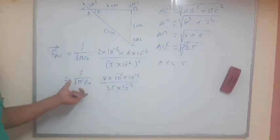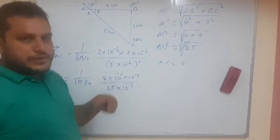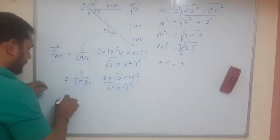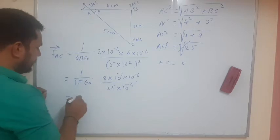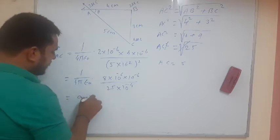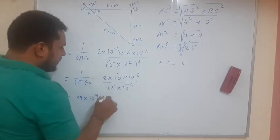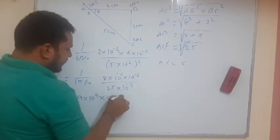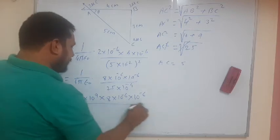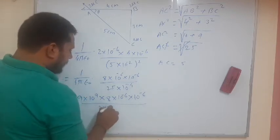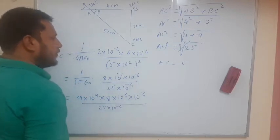Now put the value of Coulomb's constant that is 9 into 10 raise to 9 in this given equation. So instead of 1 upon 4 pi epsilon 0 we put the value of this Coulomb's constant that is 9 into 10 raise to 9 into what? 8 into 10 raise to minus 6 into 10 raise to minus 6 upon what? Upon 25 into 10 raise to minus 4.